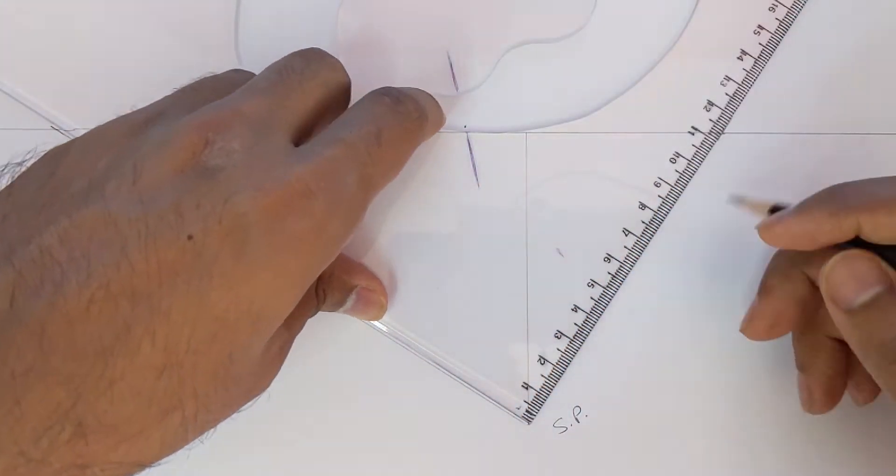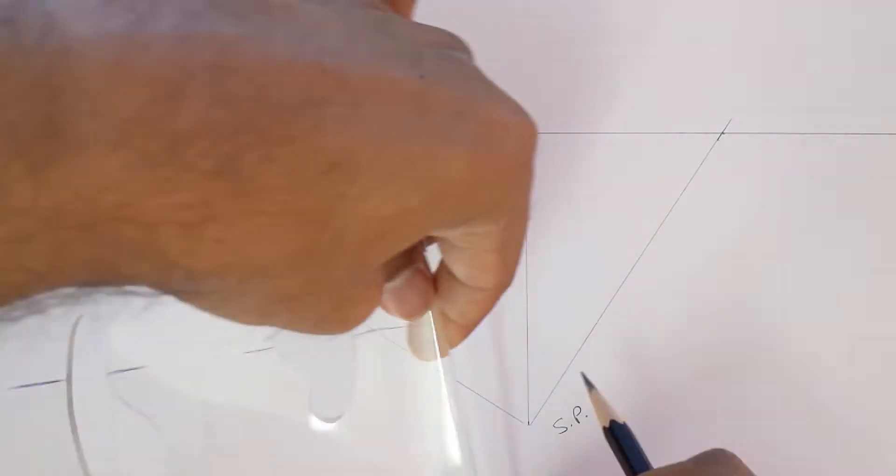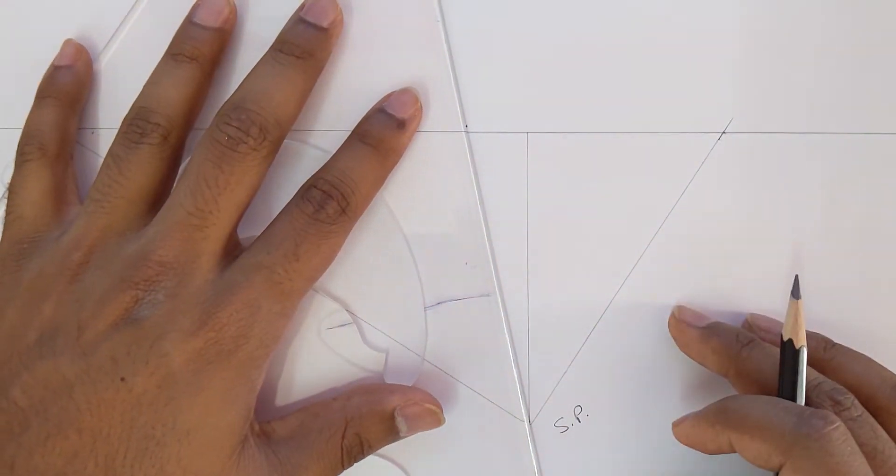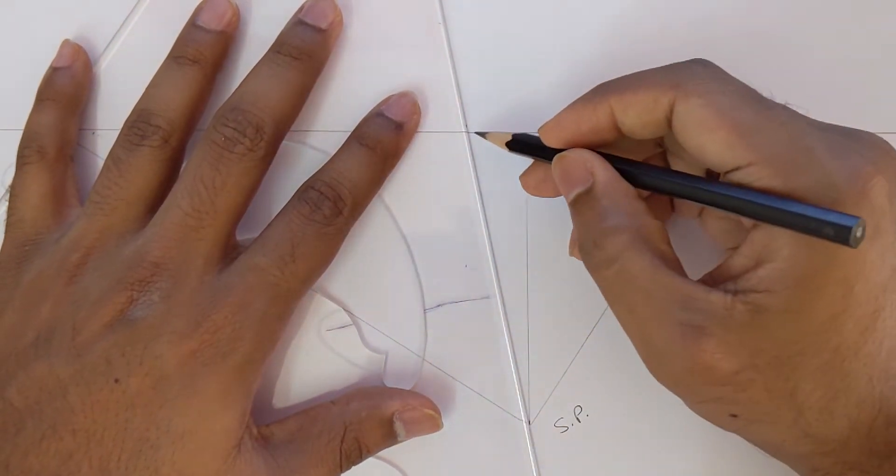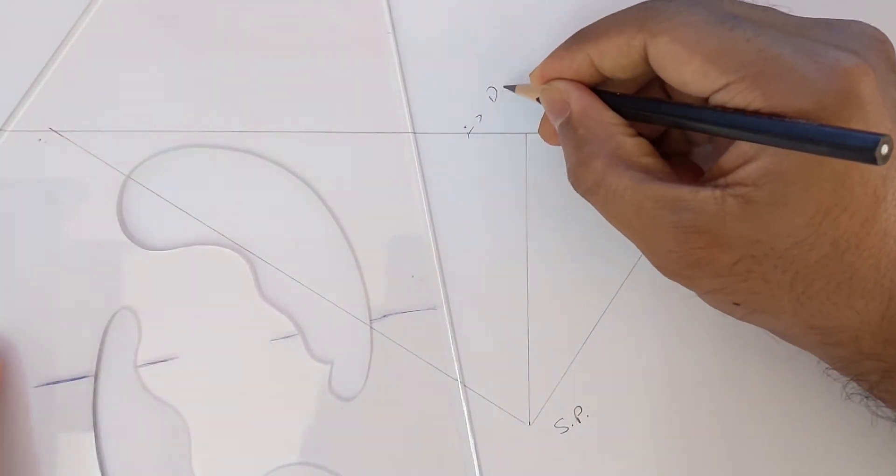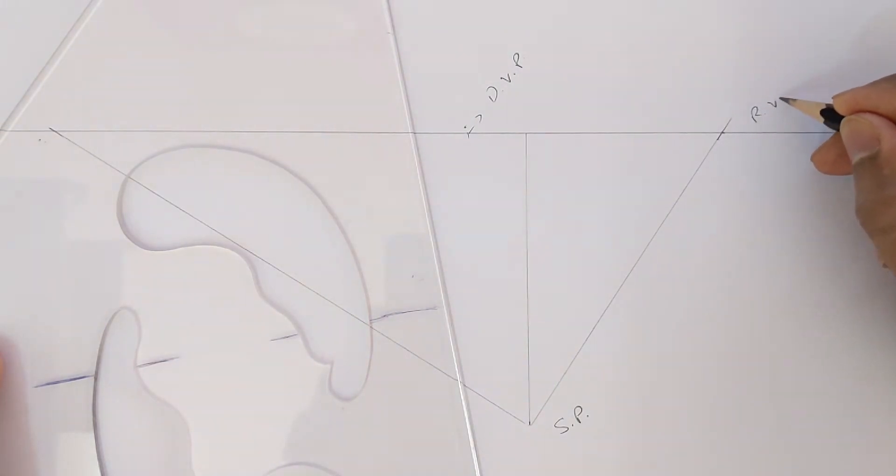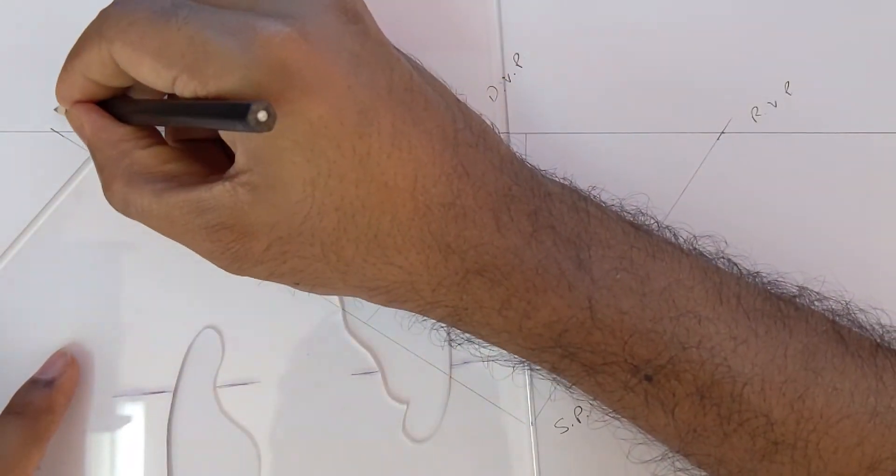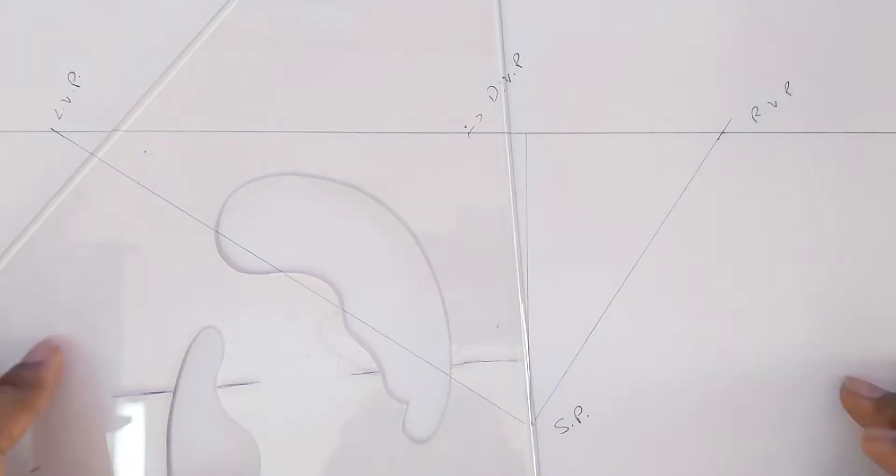This point should be on the horizon line, like so. This is our diagonal vanishing point, this is our right vanishing point, and this is our left vanishing point.